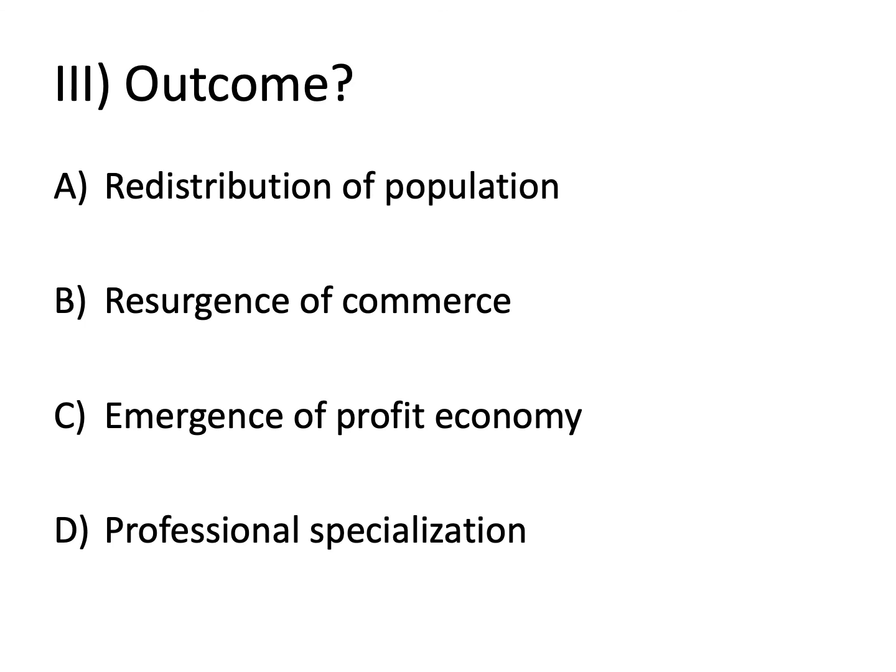By around 1250, what we see is a redistribution of the population: instead of the vast majority of people in England living in the countryside, a fair percentage now lived in urban centers. There is a resurgence of commerce that was much more prevalent perhaps during the Roman period but is now moving toward modern trends. The profit economy — replacing the subsistence economy — becomes familiar: the goal for most people is not just to survive but to actually increase one's wealth and standing. And there is professional specialization, with more and more people engaging in particular occupations, developing expertise, and selling goods for profit.